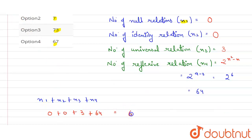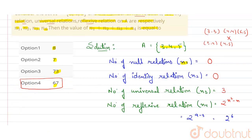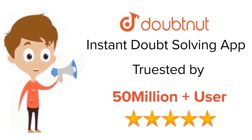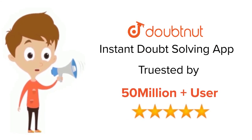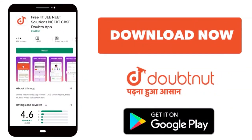The overall sum is 67. Looking at the options, option 4 matches the answer, so option 4 is the correct answer. Thank you. For class 6 to 12, IIT JEE and NEET level, trusted by more than 5 crore students — download the DoubtNet app today.